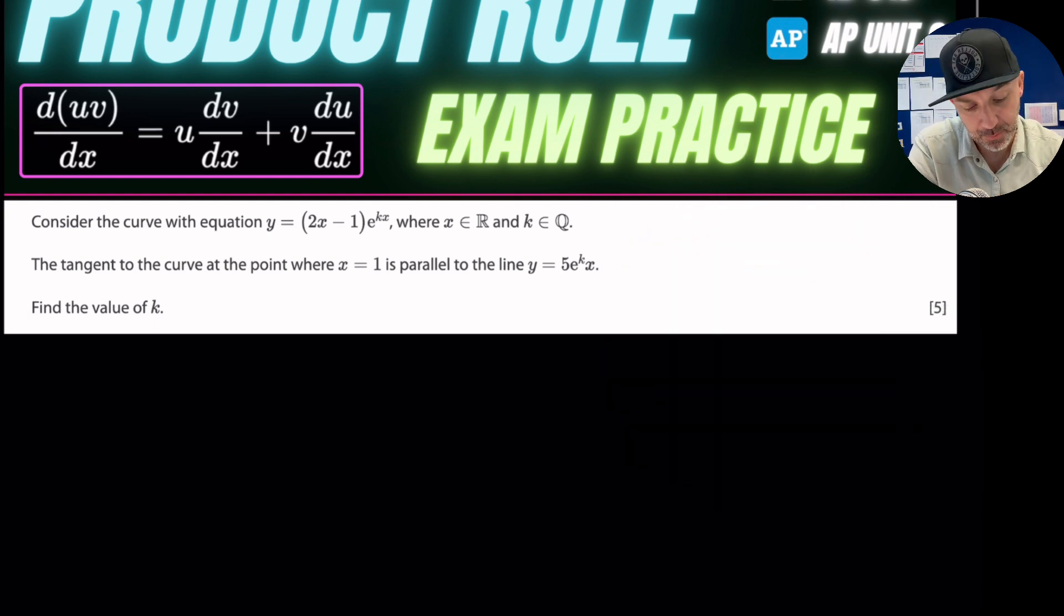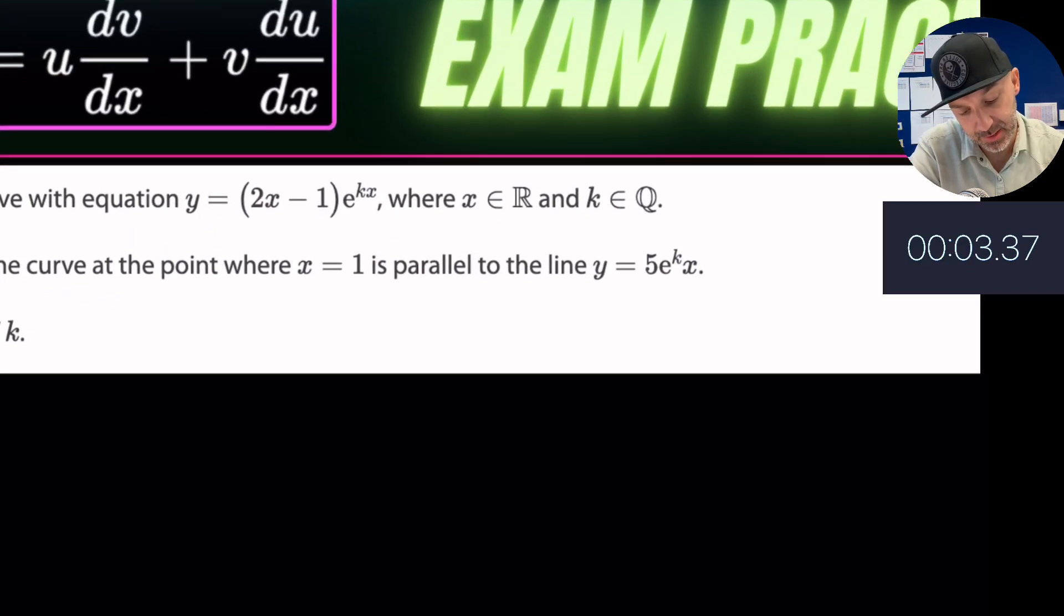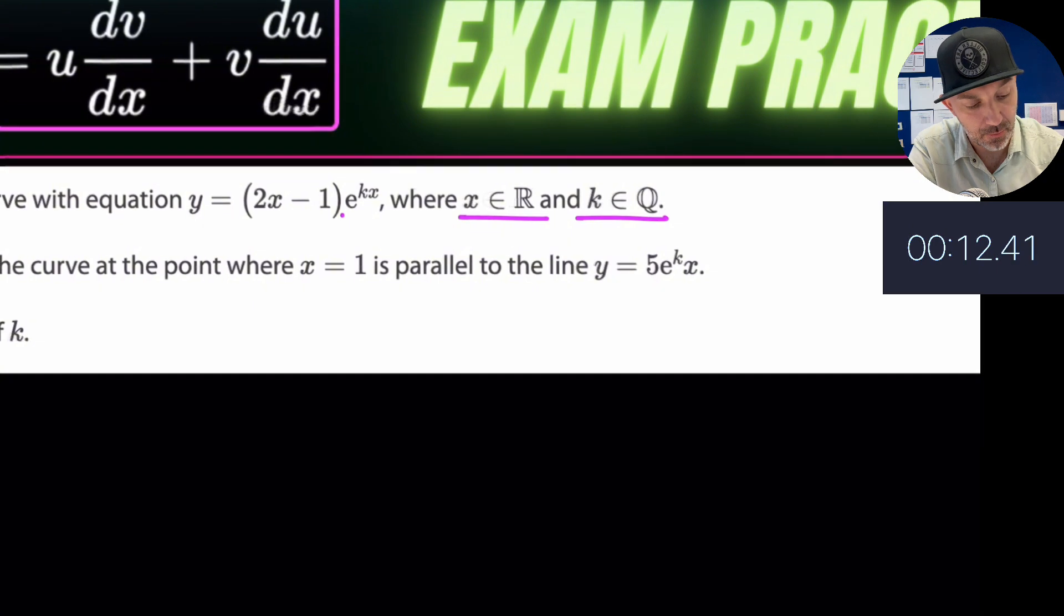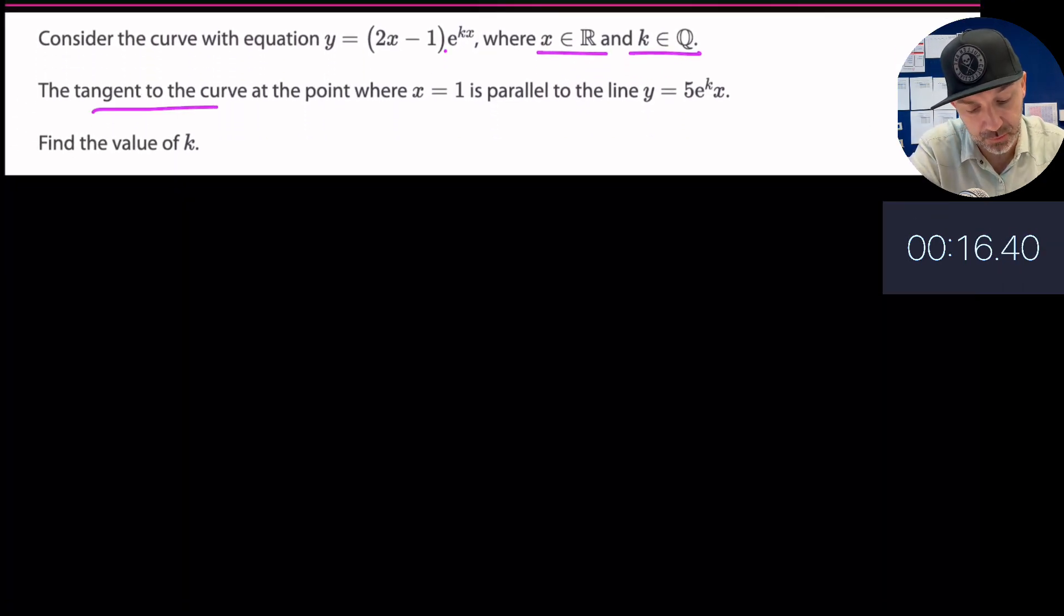Consider the curve with equation y equals (2x - 1) times e to the kx, where x is an element of the real numbers and k is an element of rational numbers Q.